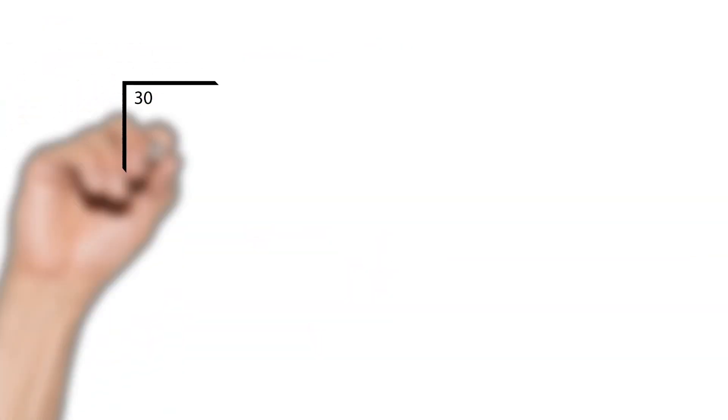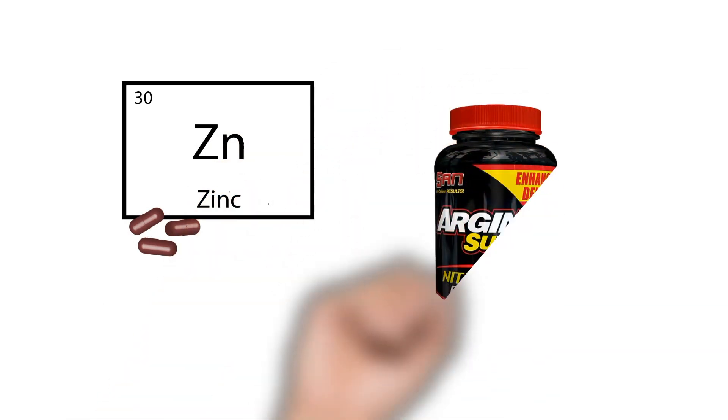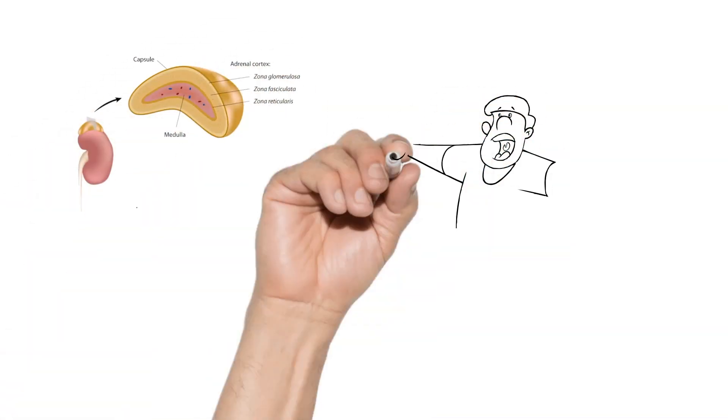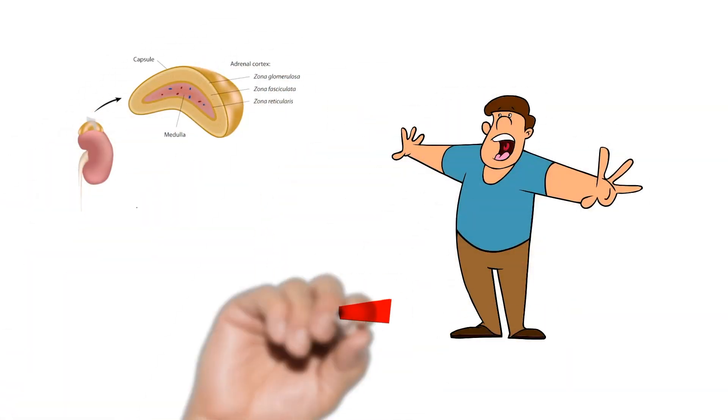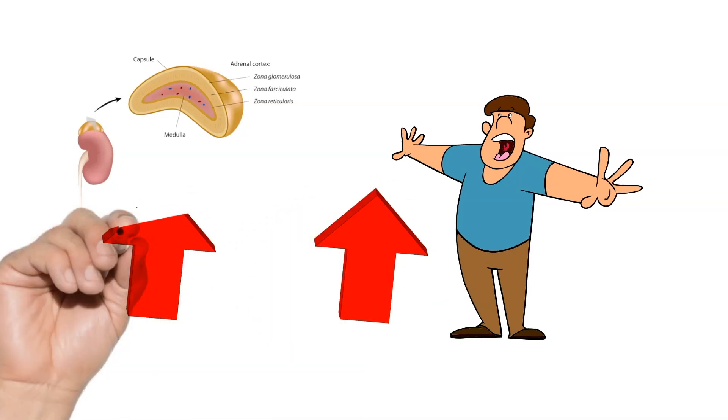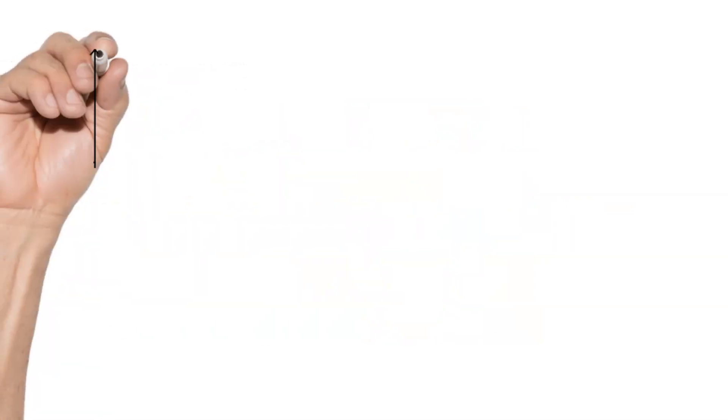Medications that might increase growth hormone levels are zinc and arginine. Now let's talk about cortisol. Cortisol is a stress hormone, meaning the more stressed you are, the higher the level is. Cortisol makes you store fat, so how do